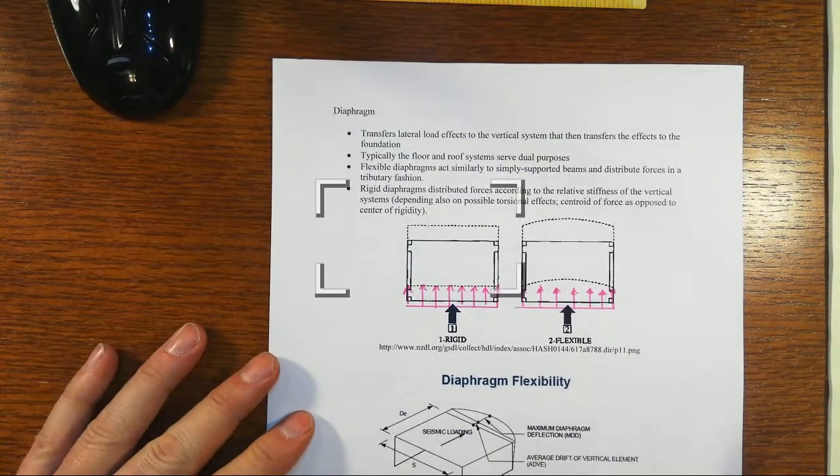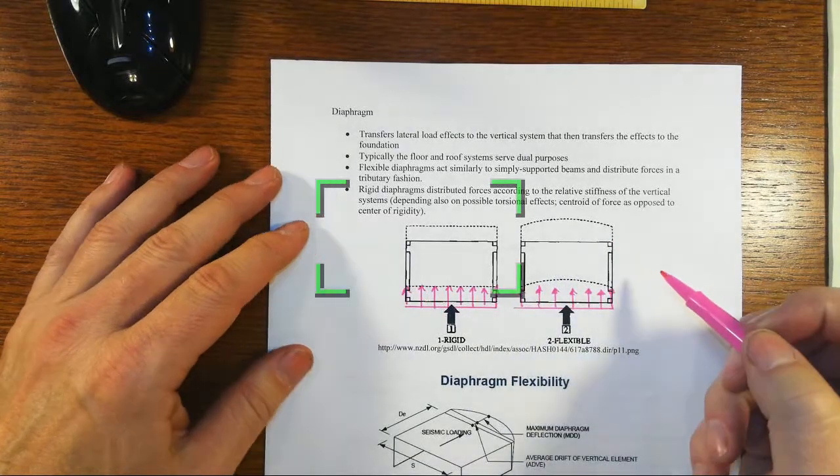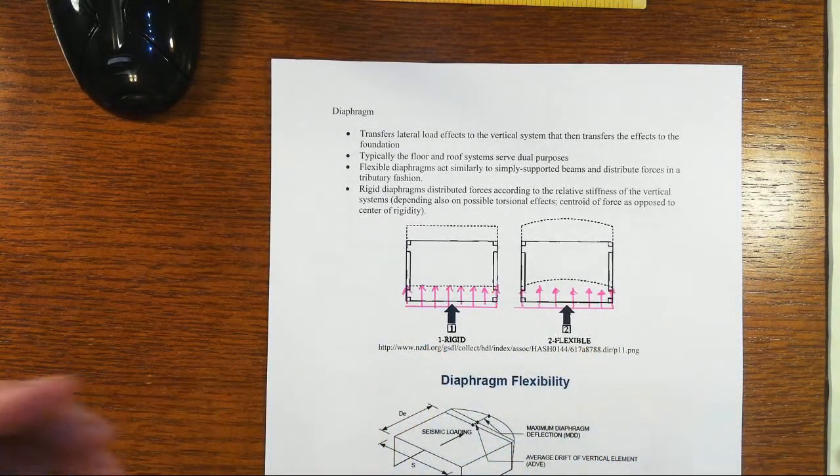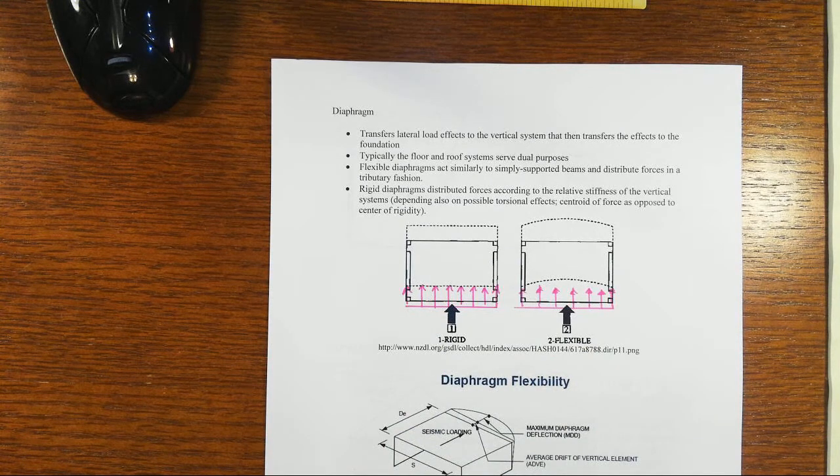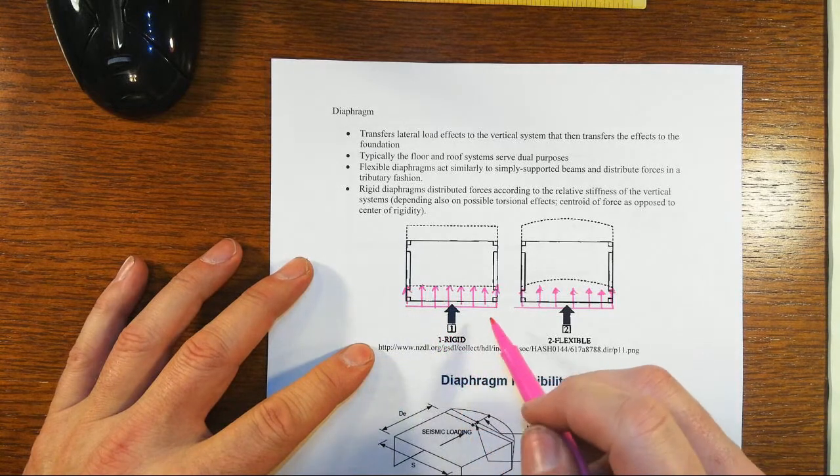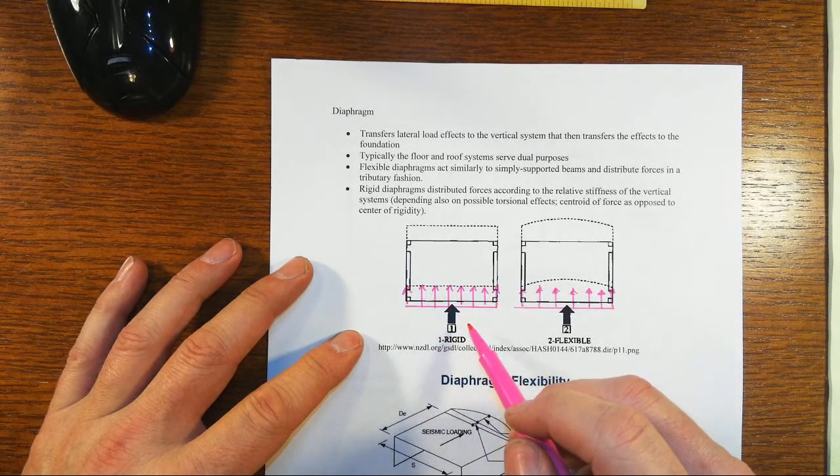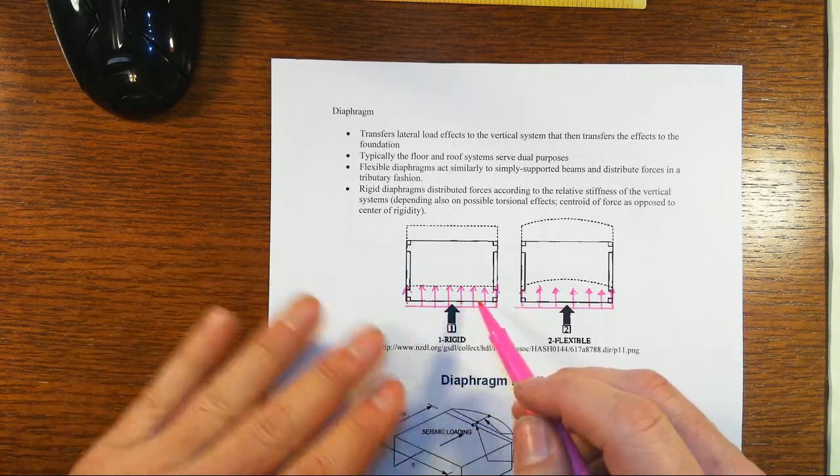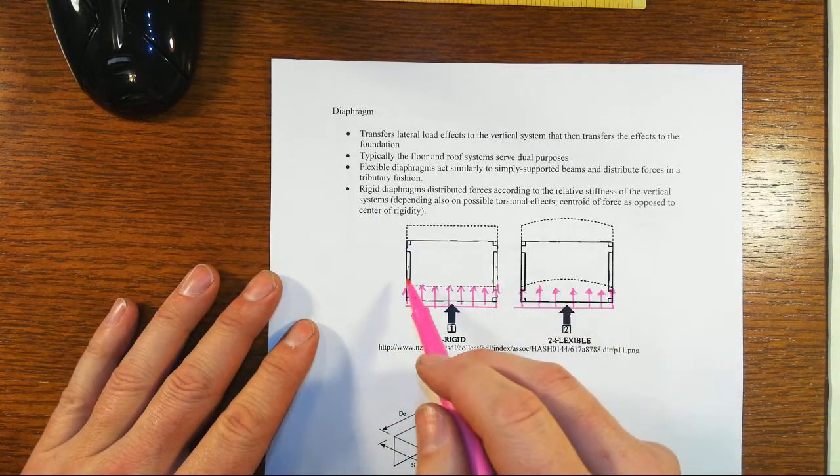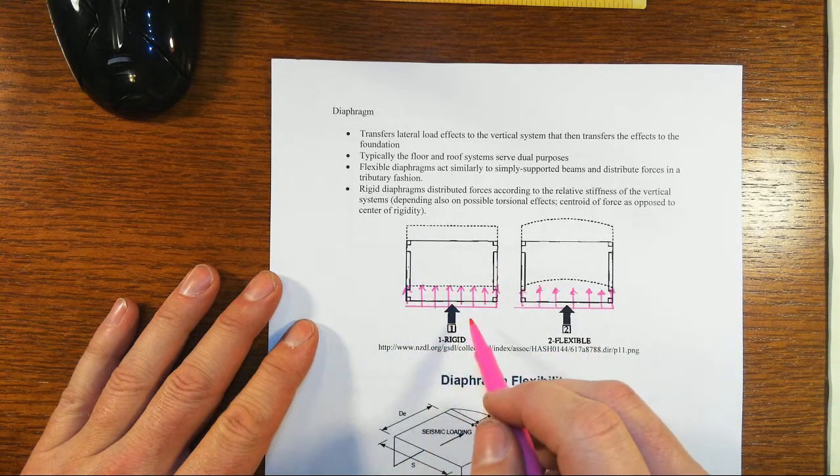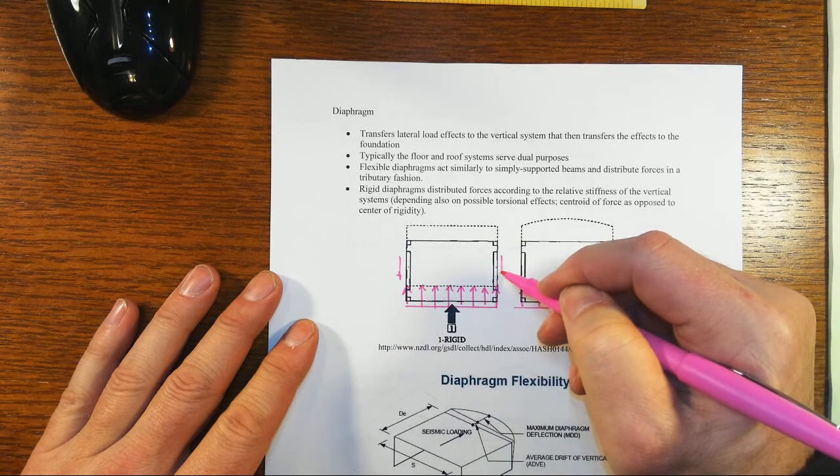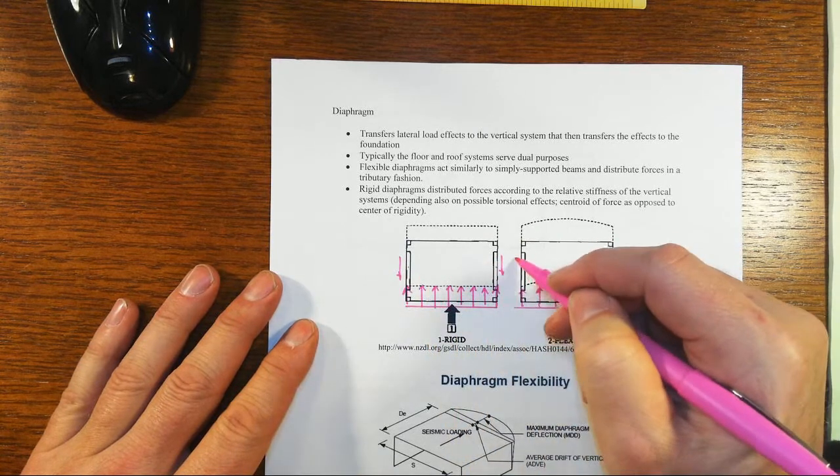Now one other really crucial part about diaphragms is that there are two basic classes: rigid versus flexible, with sort of direct apparent names, or the names are direct and apparent to how they respond to the forces. So a rigid diaphragm, now this is a plan view looking at the horizontal thing, and we've got two vertical elements coming out at you in the screen to the side that the diaphragm is transferring forces over to, so your reactions to that simply supported beam would look something like so.